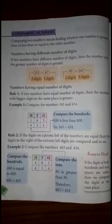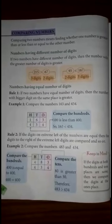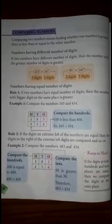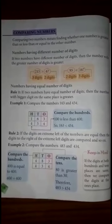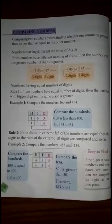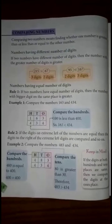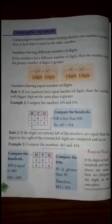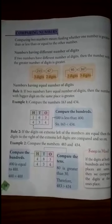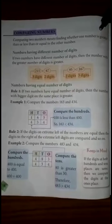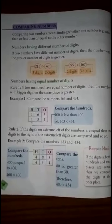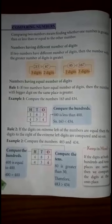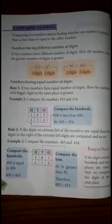We have two rules. The first rule is for numbers having a different number of digits. How do we compare two numbers with different numbers of digits, and how do we know which is greater? The number with the greater number of digits is greater.